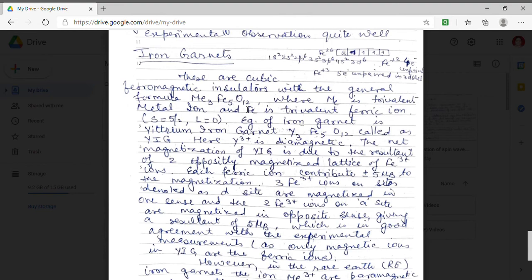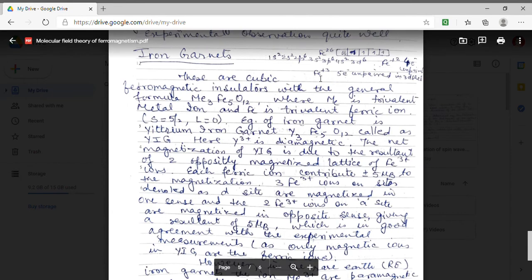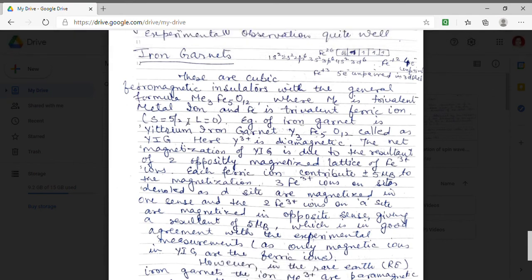And since iron has atomic number 26 and in the 3D shell there are 6 electron when it is in Fe 2 plus state. In Fe 3 plus state there will be 5 unpaired electrons. Hence spin will be equal to 5 by 2 as each electron contributes a spin of half and angular momentum contribution is 0. The most common example of iron garnet is yttrium iron garnet.